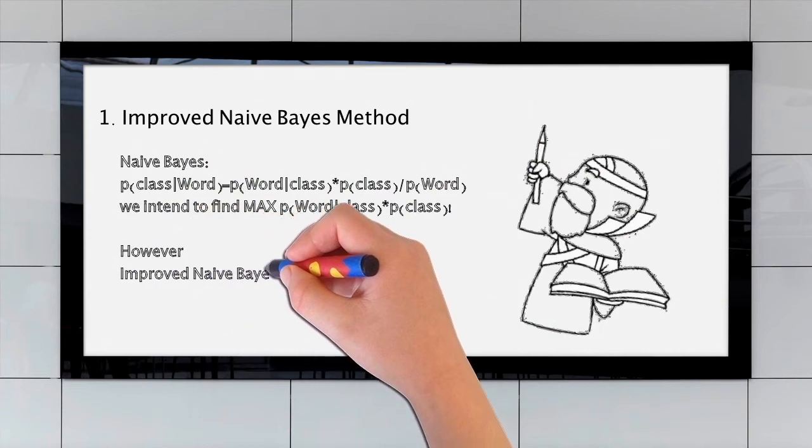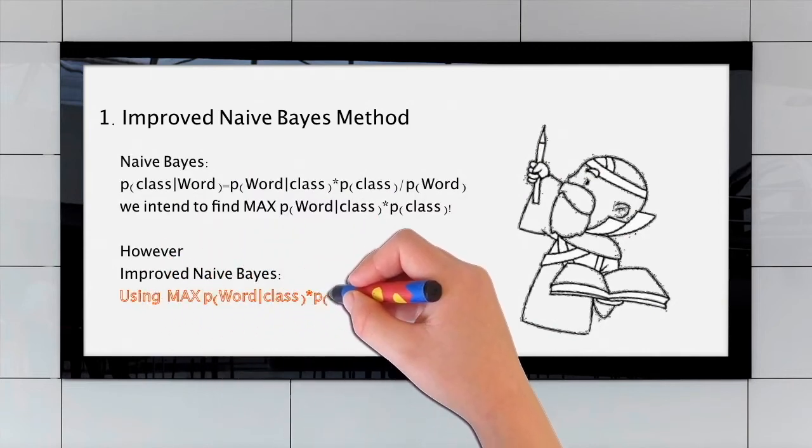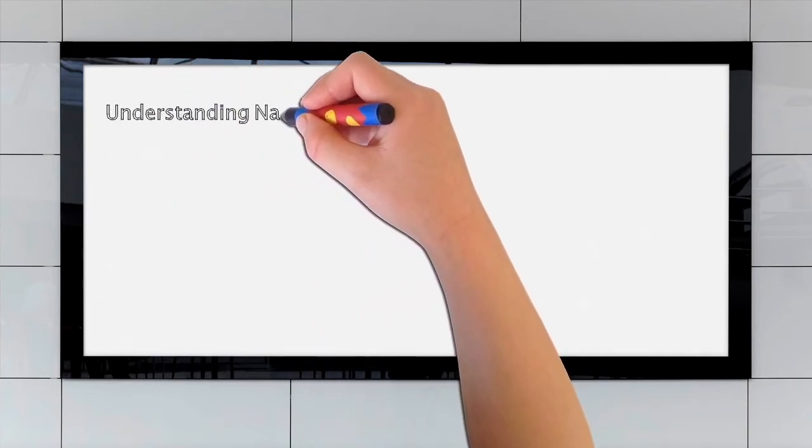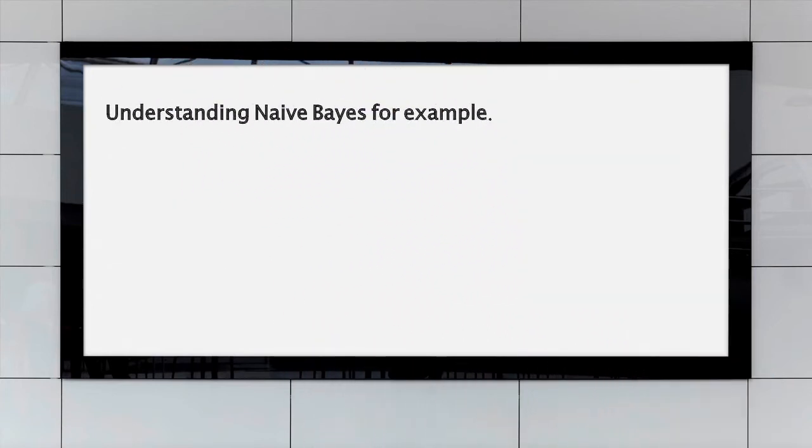However, the Improved Naive Bayes is to introduce an adjustment factor weight as the following formula. Next, let's have an example for understanding Improved Naive Bayes.